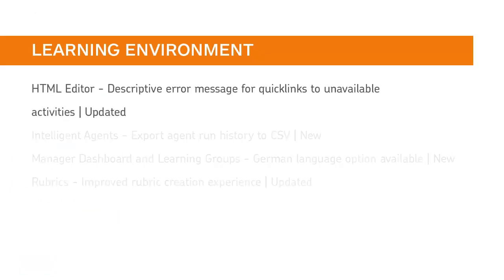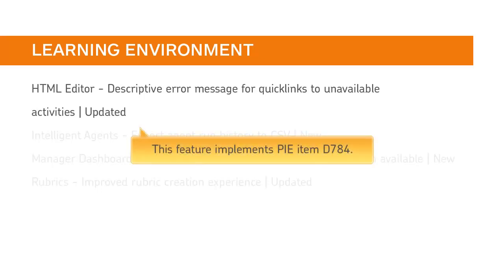A specific error message now appears to users who click a quick link to an activity that is outside the availability dates. For more information about supported tools, review the release notes. This feature implements PIE item D784.